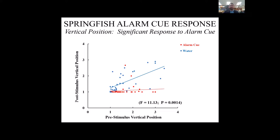We did, however, see a change in vertical position when we looked at the springfish. On the x-axis you have the pre-stimulus vertical position, and on the y-axis we have the post-stimulus vertical position. Alarm cue is once again denoted in red, and the water or control treatment is denoted in blue. You can see that when compared to the control, after giving the springfish the alarm cue treatment, they would change their position in the tank — anywhere from position one to three — and they would settle down on the bottom of the tank in that number one bottom water column.